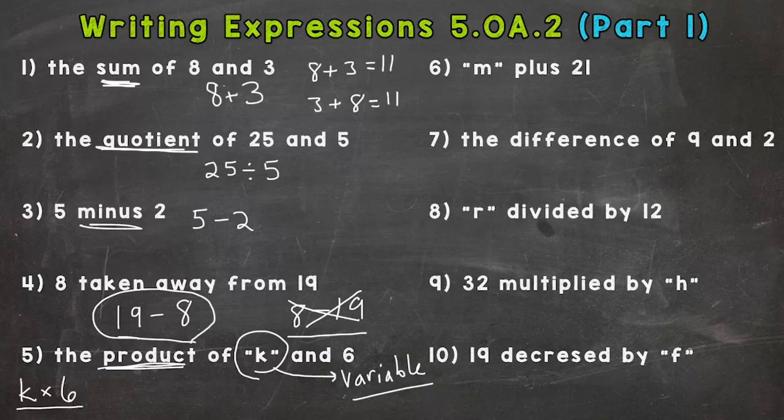The most common thing in algebra is the number right next to the letter. And usually you will see the number come first. Remember, multiplication is commutative, so you can switch the numbers and letters and still get the same answer. So 6k—that would mean six times k.